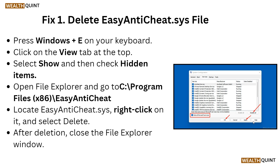Press Windows + E on your keyboard and click on the View tab at the top. Select Show and then check hidden items. Open File Explorer, go to Program Files and the EasyAntiCheat folder. Locate EasyAntiCheat.sys, right-click on it and select Delete. After deleting, close the File Explorer window.